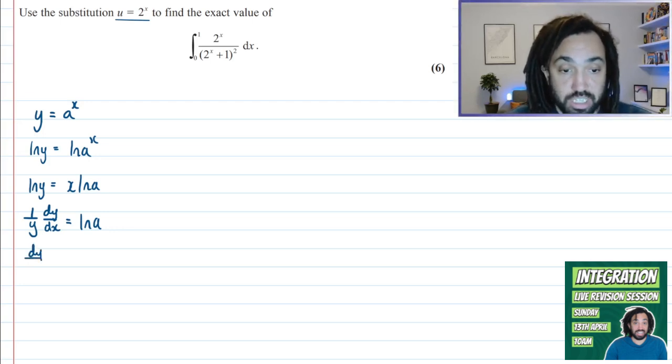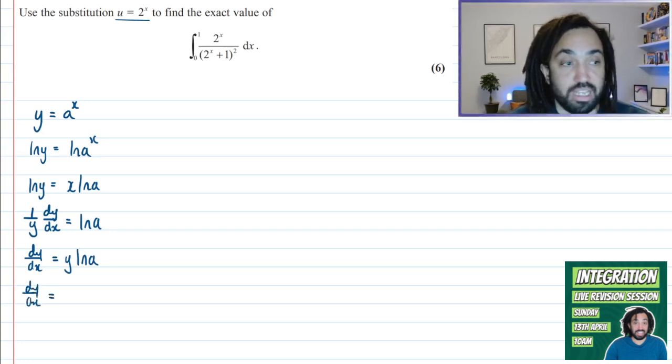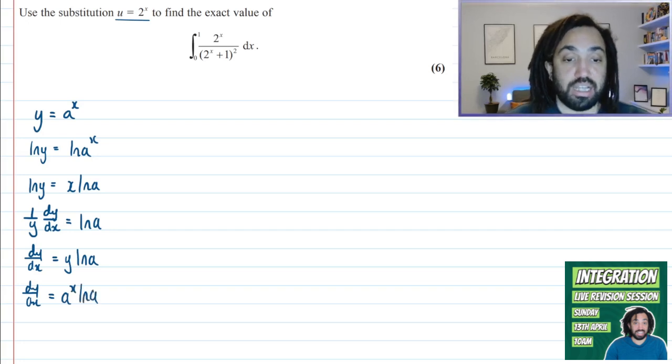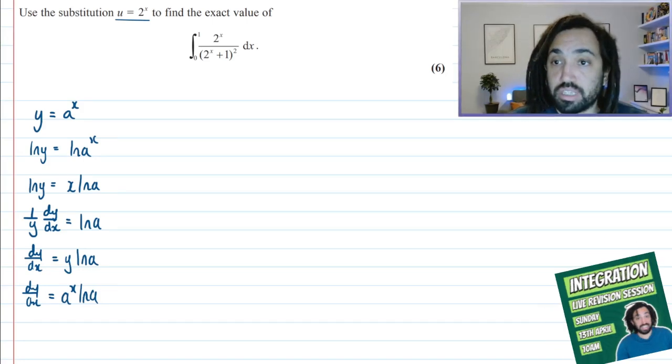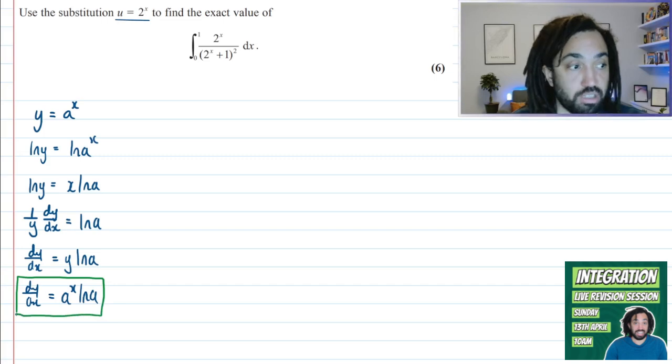Okay, so the next thing we could do is isolate and find DY by DX on its own by multiplying both sides by Y. And then we can take this and we can say that Y is A to the X, as it says right at the top. So therefore we get A to the X ln A. Perfect, so that is the proof. I can box that up, and I'm going to use that in order to differentiate our substitution.